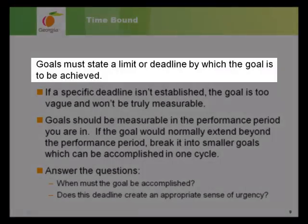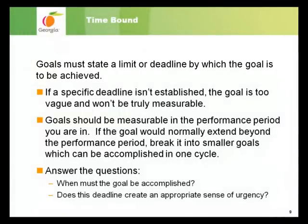Goals must state a limit or deadline by which they are to be achieved. If a specific deadline isn't established, the goal will be too vague and won't be truly measurable. The time frame for your goals should also be within the performance cycle you're in. If the overarching goal would normally extend through multiple years, you should break it into smaller goals which can be accomplished within one performance cycle. When trying to make your goals time-bound, ask yourself: When must this goal be accomplished? And does this deadline create an appropriate sense of urgency?